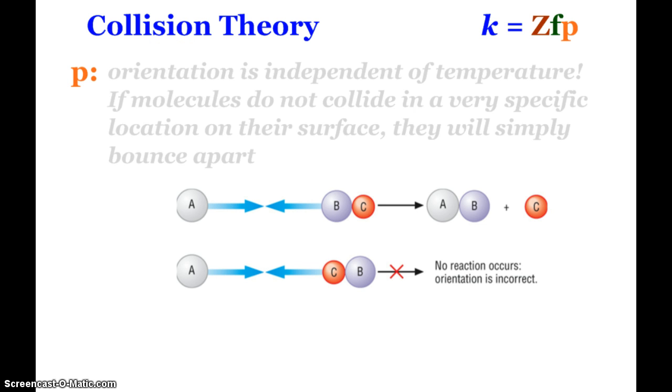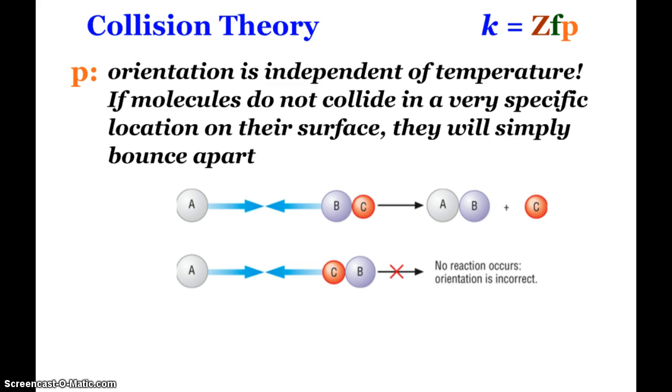The P factor is the orientation, and this is completely independent of temperature. If molecules do not collide in a very specific location on their surface, they're just going to bounce apart and no reaction will occur. If A and BC collide in the proper orientation, we would see the reaction occur. If they collide inappropriately, no reaction occurs because the orientation is incorrect. This is independent of temperature but definitely an important factor for collision theory.